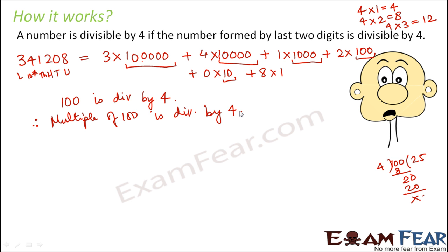Then 100×100, that is 10,000, is also divisible by 4. Then 100 multiplied by anything will also be divisible by 4. So when you look at these terms, what do you see?